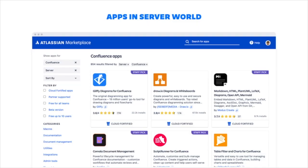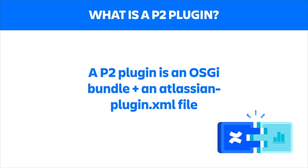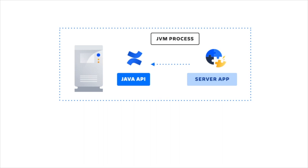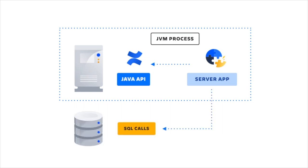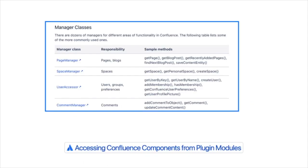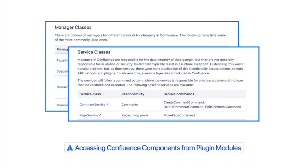Apps in the server world were these things called P2 plugins. A P2 plugin can just be thought of as a bundle of code that can be dropped into an Atlassian server product to add new functionality or change the behavior of existing features. One of the beautiful parts about P2 plugins is that because the plugin or server app ran from within the same JVM process, it can make direct Java API calls to the Confluence application. And if needed, it could even fire off direct SQL calls to the Confluence database, which made fetching information extremely easy and efficient. With the manager and service classes, plugins could fetch all sorts of content they could need in a matter of milliseconds. So from a P2 plugin's perspective, there was no need for a REST API.